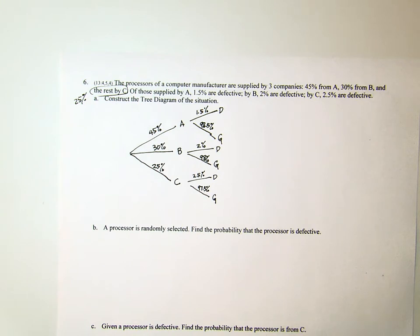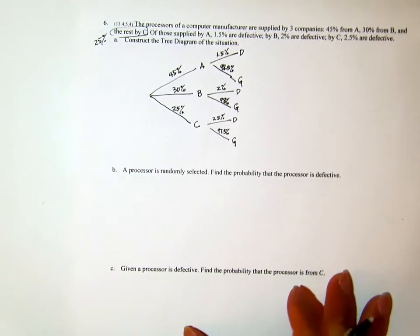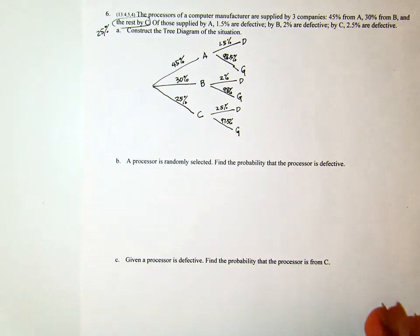Okay, that's the tree diagram. Part B: a processor is randomly selected. Find the probability that the processor is defective.